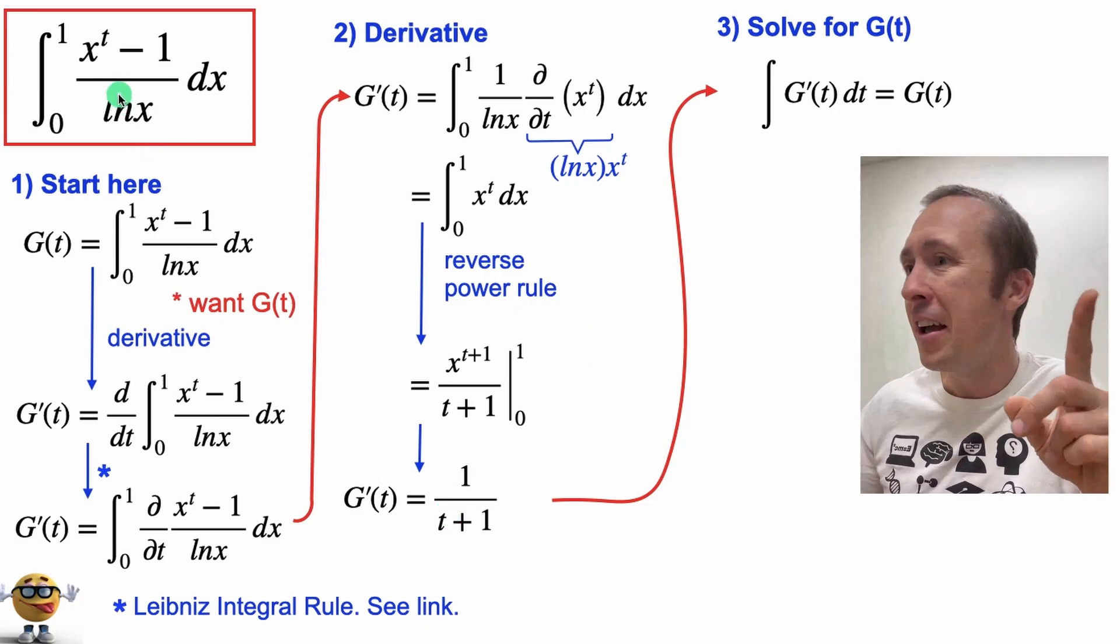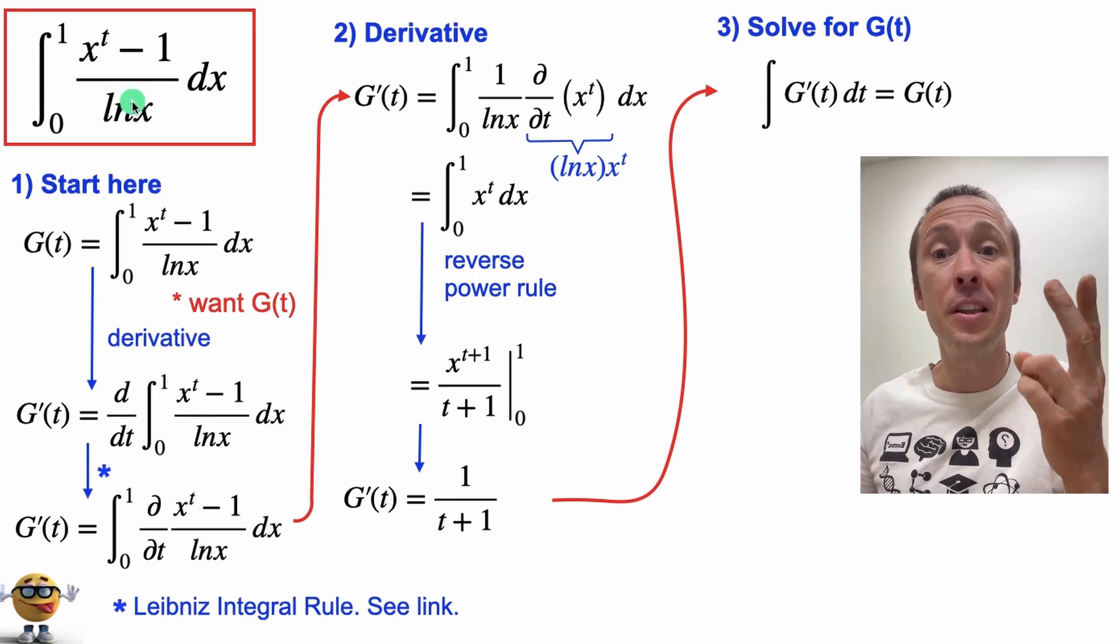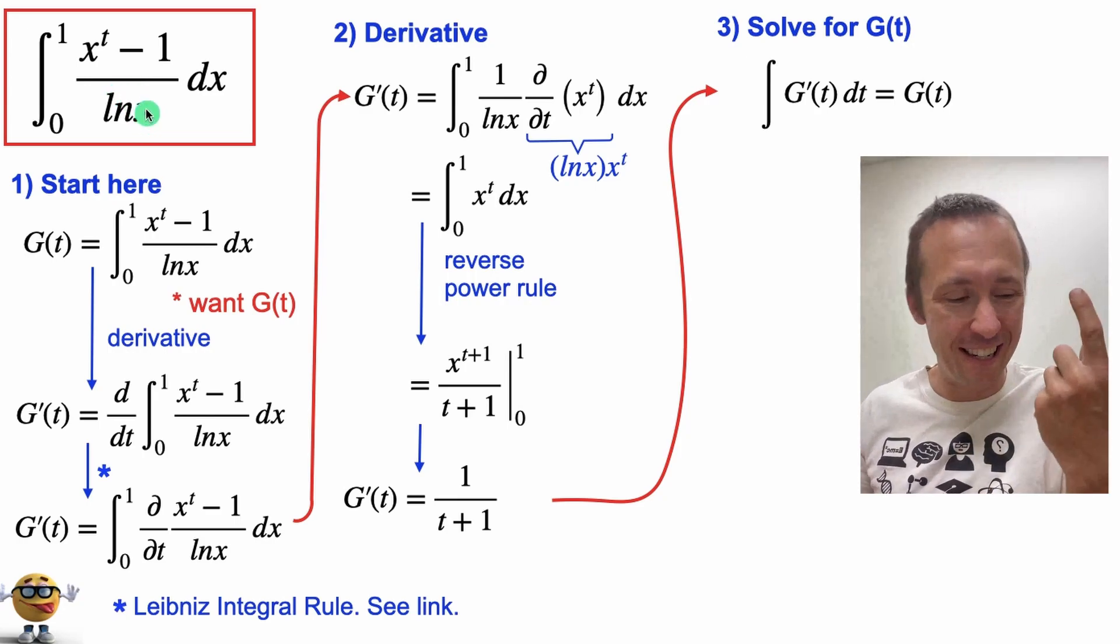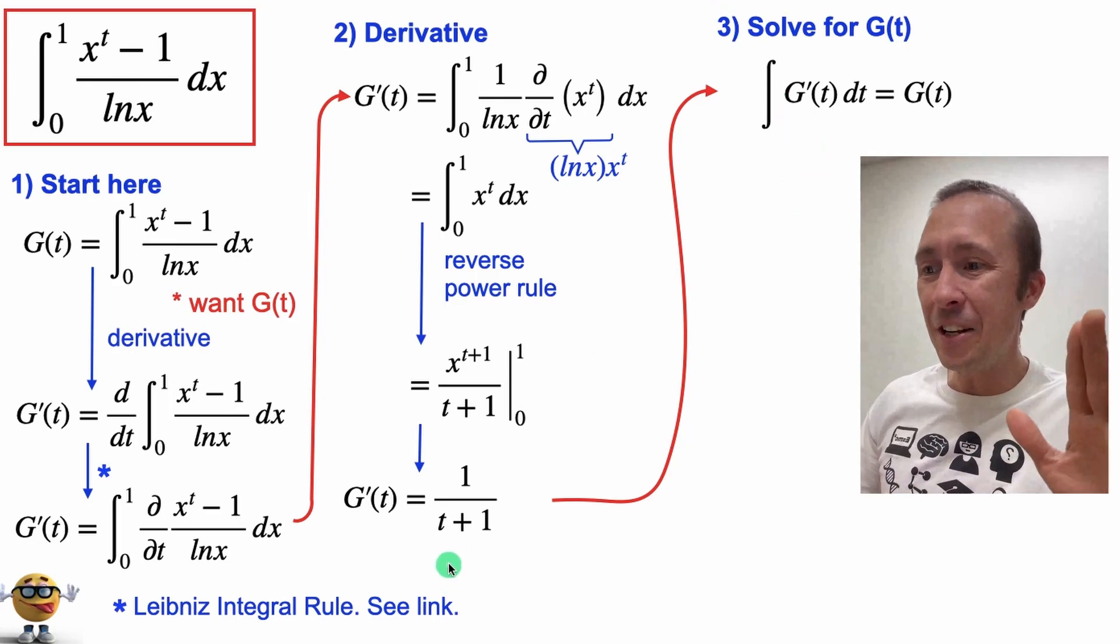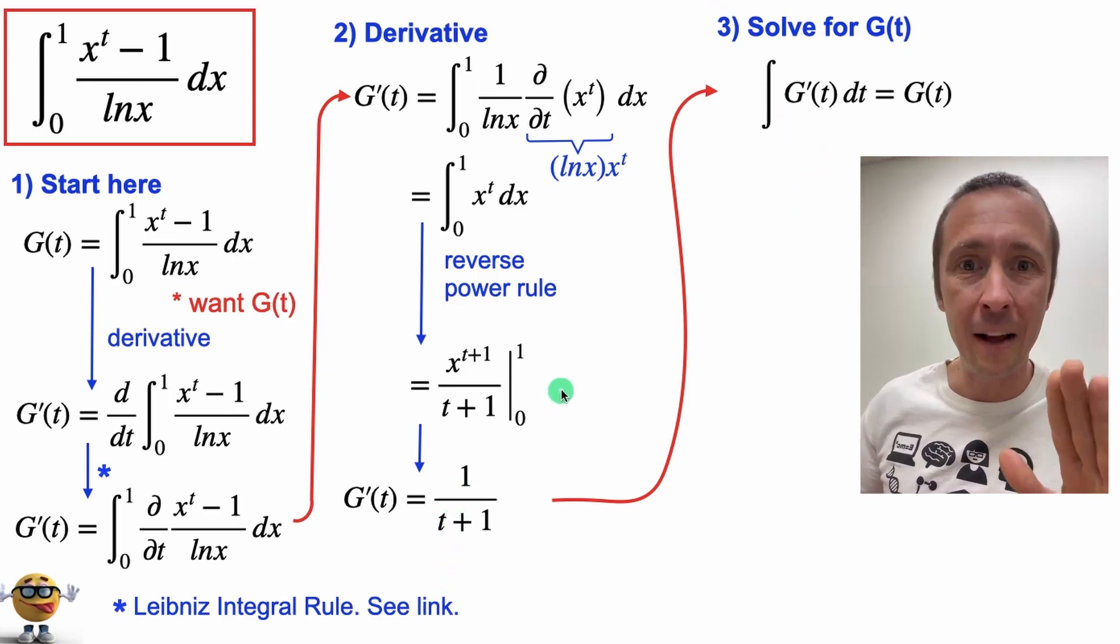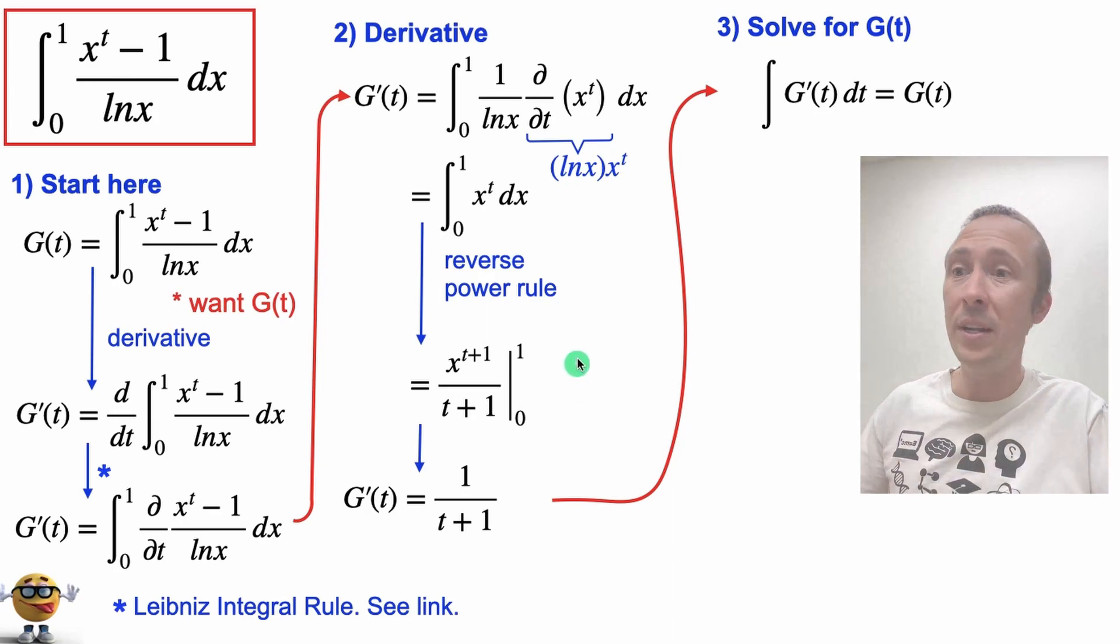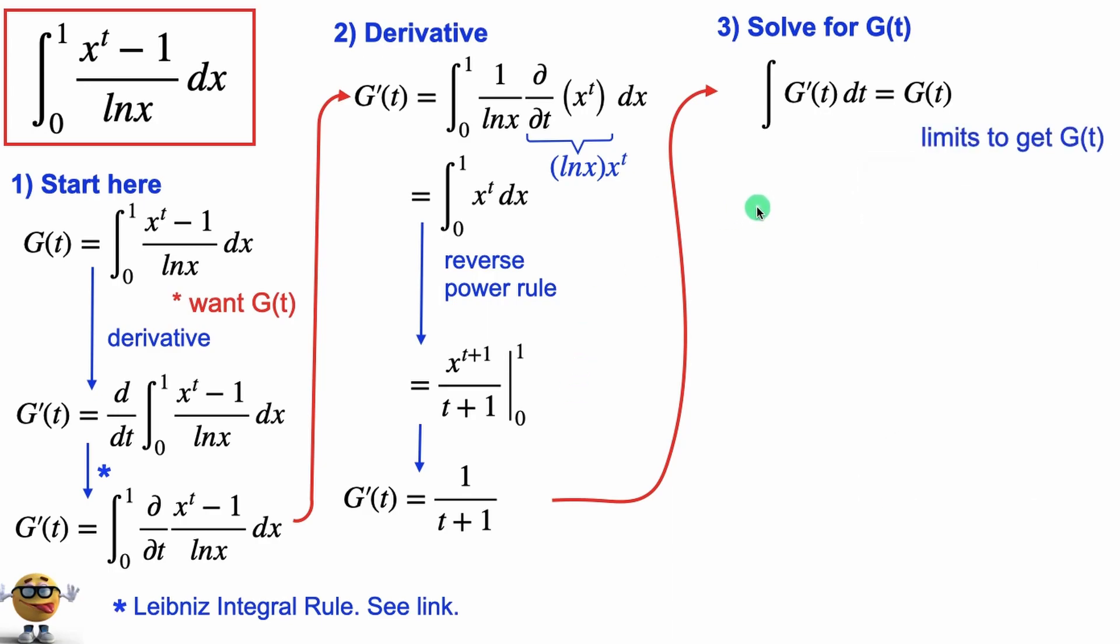So we traded one hard integral with two easy integrals. Okay now we just can't integrate this straight up though because we'll be left with an integration constant so we need to plug in limits of integration in order to deal with that constant that would result.